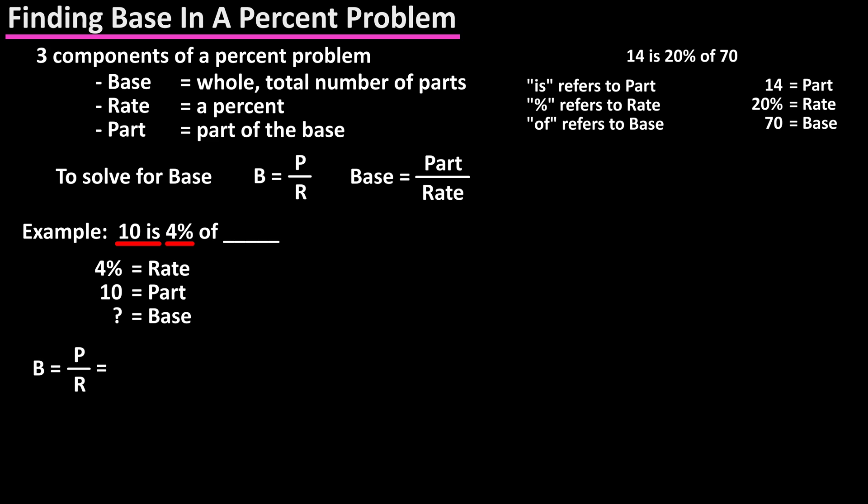Base equals part divided by rate. So base equals 10 divided by 4%. Again, we first convert the percent to a decimal by dropping the percent sign and moving the decimal point two places to the left to get 0.04.